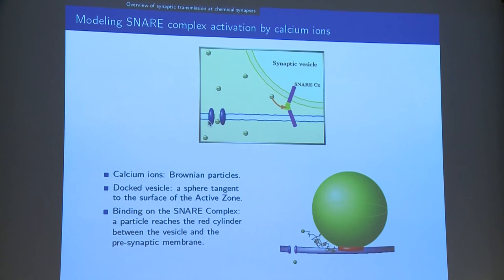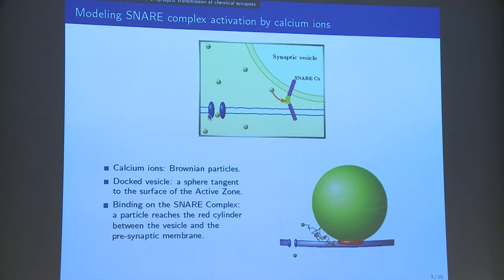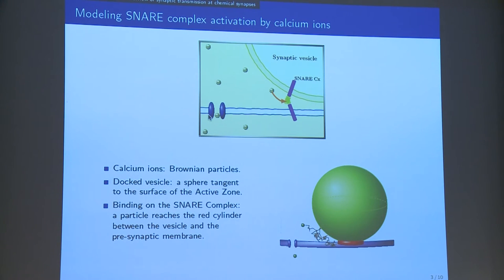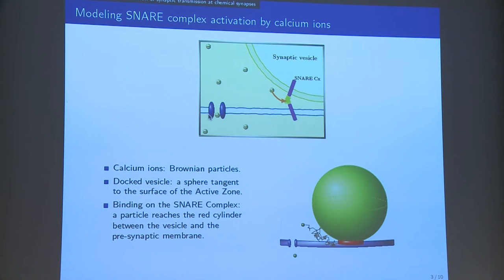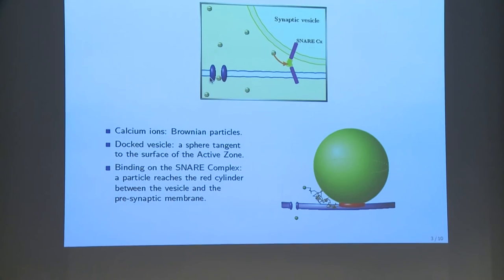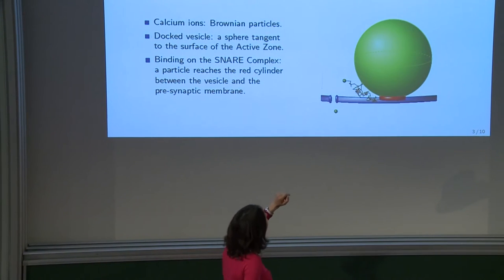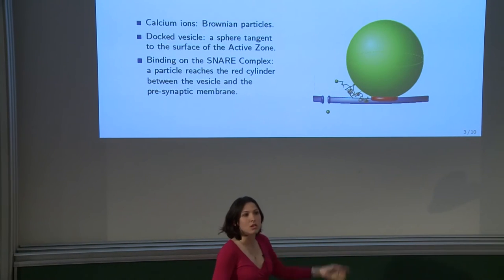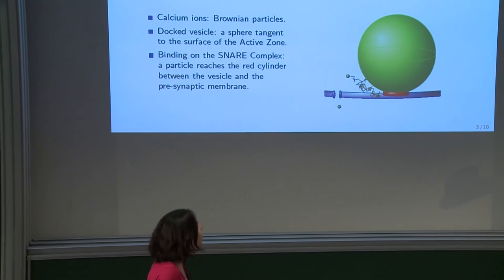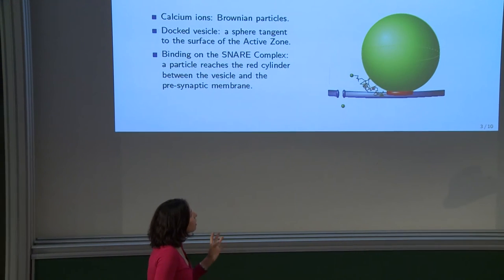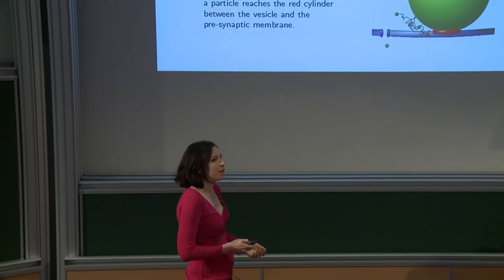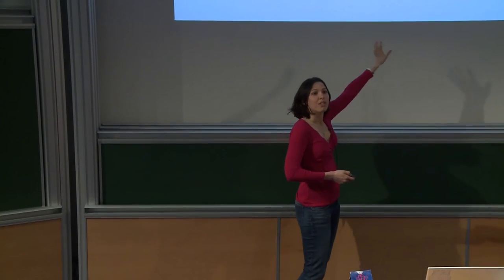The model we used is: calcium ions are Brownian particles that diffuse freely in the terminal. We know that calcium ions are charged particles, but we will neglect this in the first step. The docked vesicle is a sphere tangent to the plane — the sphere in green, the tangent plane in blue. Binding on the SNARE complex occurs when the Brownian particle finds the red cylinder — the center of the cylinder is the center of the tangential point between the vesicle and the plane.